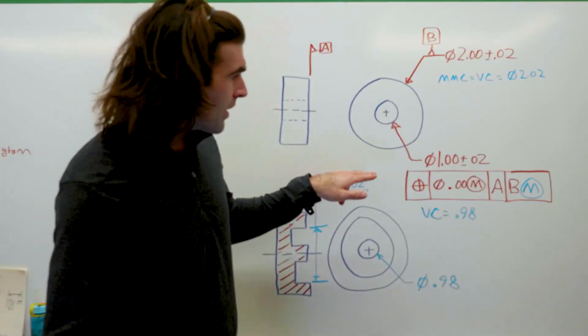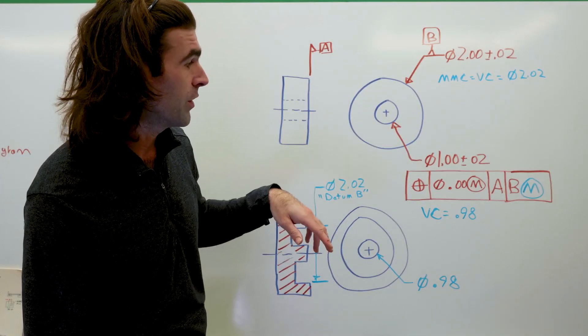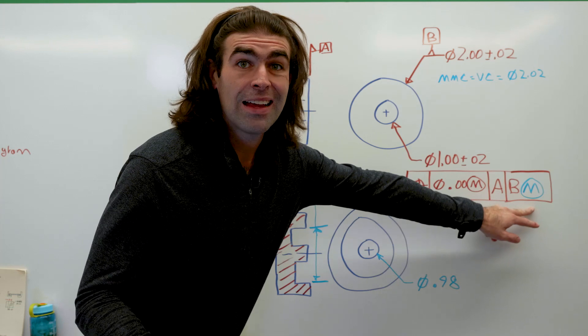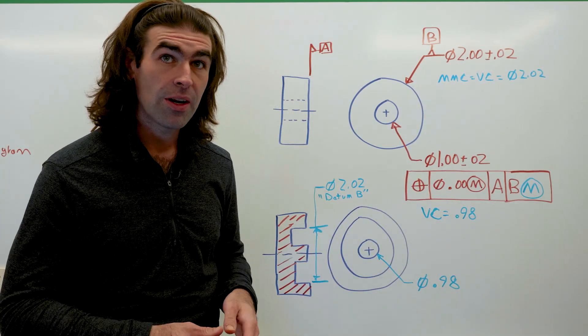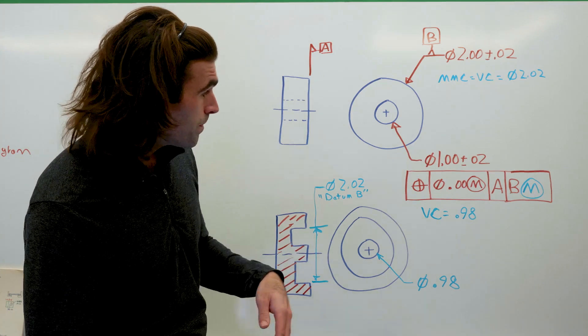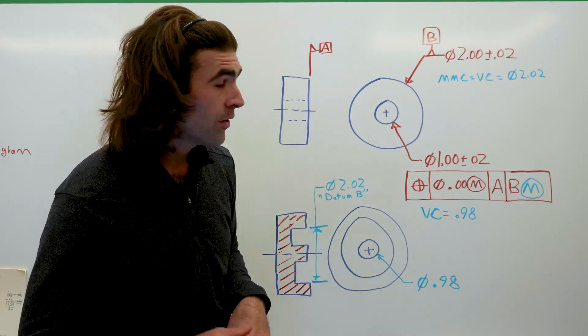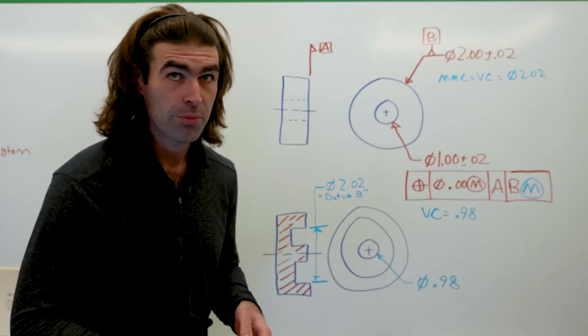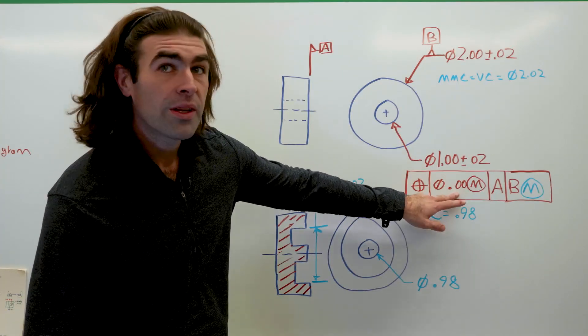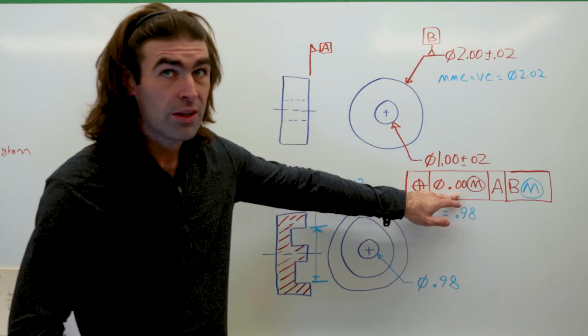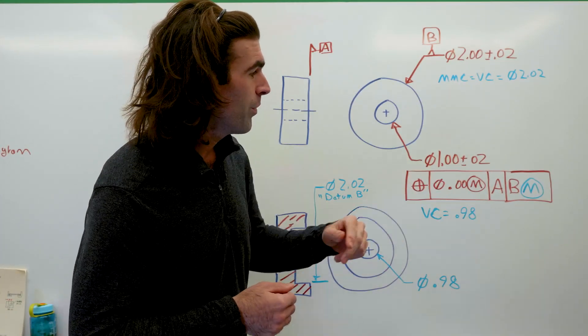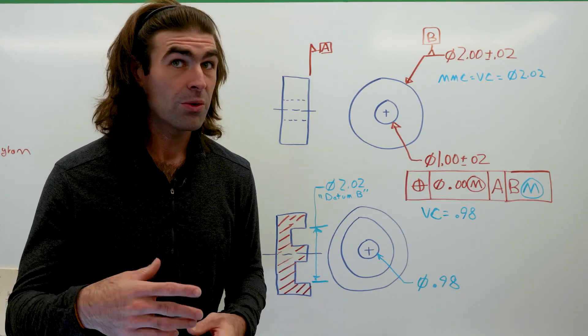is that down here, the hole going through the middle of the donut has a datum reference. So datum B can be simulated at MMC. So if it's a secondary datum, typically it's simulated at a virtual condition. In this case, it doesn't matter because the MMC is the virtual condition. So we've got a zero at MMC. So we can easily hard gauge this part if we were making a zillion of them. So this is something you might do if you're designing spacers or washers or whatever. Now, like I said before, when you had zero MMC, it makes life easy to figure out what your virtual condition is. In this case, the virtual condition of this hole is the smallest it can be, which is 0.98, the size minus the geometric tolerance, which in this case is zero.